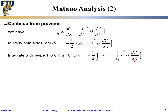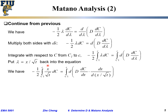Starting from c1 — one initial composition — to small c, which is any arbitrary concentration in between. Now let's put λ back: don't forget λ is our transformed parameter, x divided by square root of t. On the left side, we keep the integration from c1 to c, but λ now goes to x divided by square root of t, times dc.